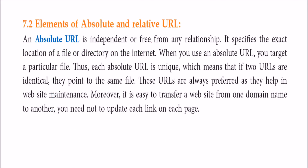There are two types of URL essentially: the absolute URL and relative URL. The absolute URL is independent or free from any relationship. It is independent by itself, and it specifies the exact location of a file or directory on the internet.